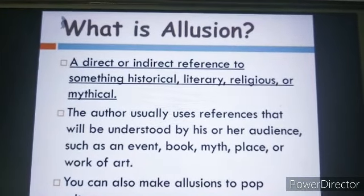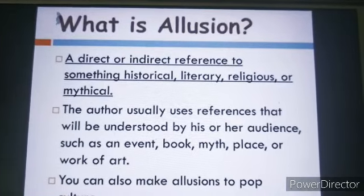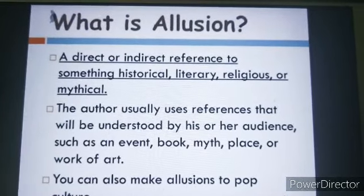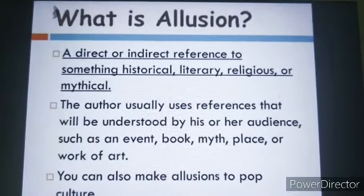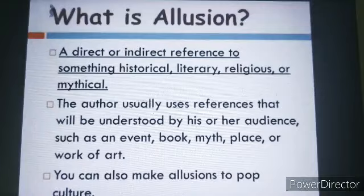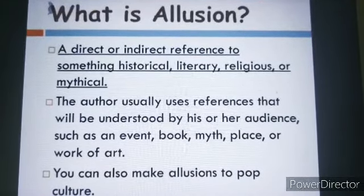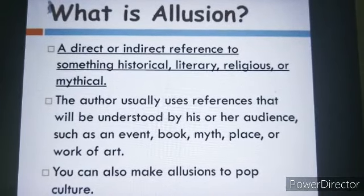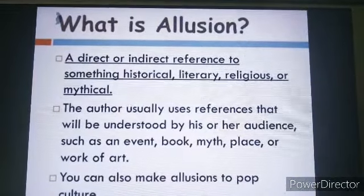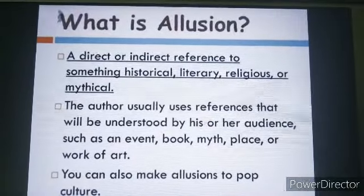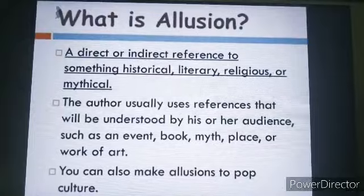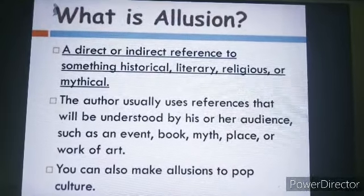Our last figure of speech is allusion. What is allusion? A direct or indirect reference to something historical, literary, religious, or mythical. The author usually uses a reference that will be understood by his or her audience. For example, if we compare someone to Einstein or a famous personality, or reference a myth or religious figure — that is allusion. You can also make allusions to pop culture.